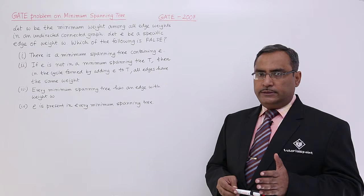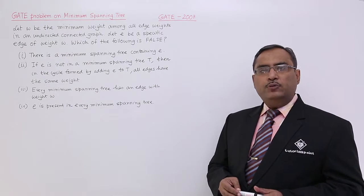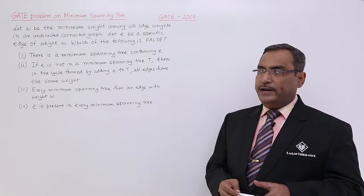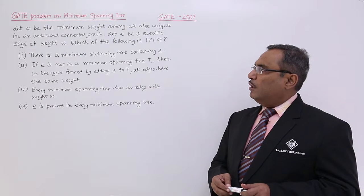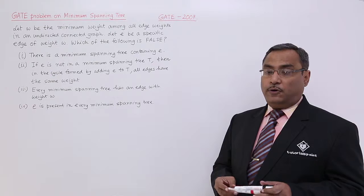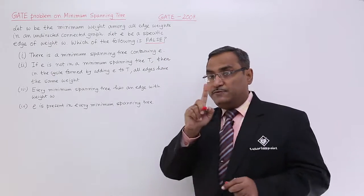This is an undirected connected graph, and obviously a weighted graph, and W is the minimum weight considering all the edge weights. Let E be a specific edge of weight W. Which of the following statement is false? Always remember, read the question very carefully - they are asking which statement is false.